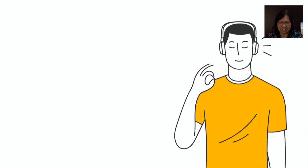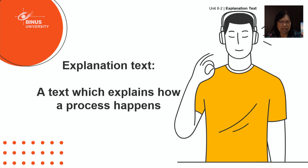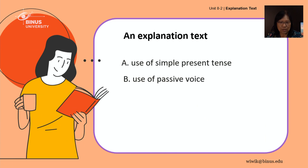Let's review first. In our last session on explanation text, we discussed how to write an explanation text and how passive voice is used in it. A text which explains how a process happens is usually written in passive construction.